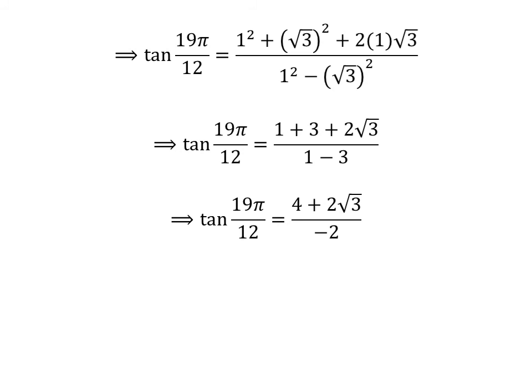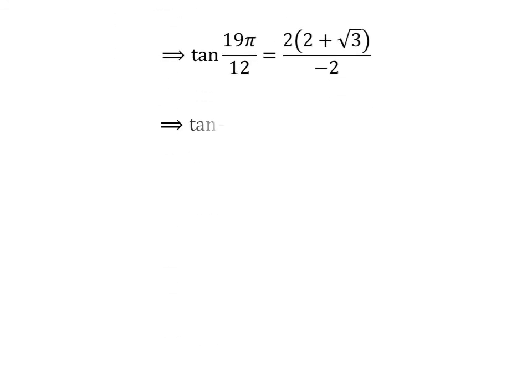Further simplification gives us tangent of 19 times pi upon 12 is equal to 4 plus 2 times square root of 3 upon negative 2, where I have taken out the common factor 2 in the numerator. Cancelling out the common factor 2 in the numerator and denominator gives us tangent of 19 times pi upon 12 is equal to negative of 2 plus square root of 3.